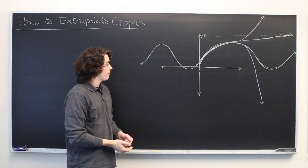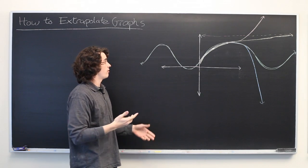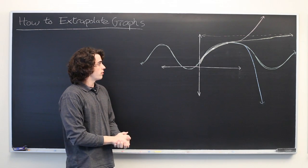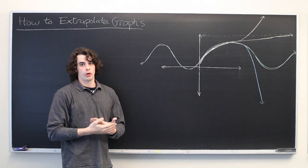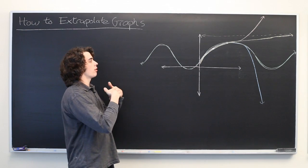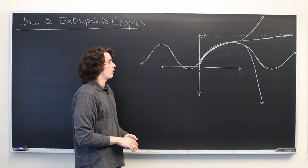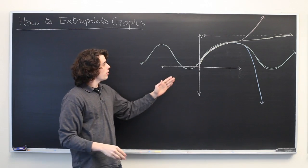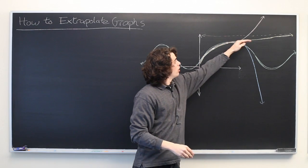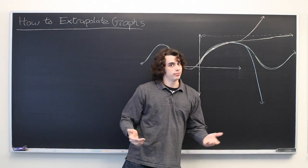So really, there's a number of different options given whatever pieces of information you have. You just have to analyze what the function is trying to model and determine what behavior you would expect such a function to have in the long run. And then just connect your dots to whatever behavior you're anticipating, and you're good to go.